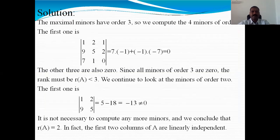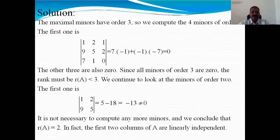For a 3 by 4 matrix example: the maximal minor is of order 3 by 3, and there will be four such minors. We evaluate all their determinants. If all of them are 0, the rank is not 3, so we go for a 2 by 2 minor. We find one 2 by 2 minor whose determinant is minus 13, which is not equal to 0. So the rank of the matrix in this case equals 2, meaning there are two linearly independent vectors.